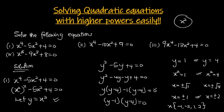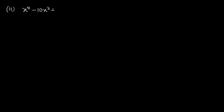Based on this first example, you can go ahead and try the second, third, and last examples. Pause the video and attempt them using the explanation I just gave. For the second example we have x⁴ - 10x² + 9 = 0. Just like before, we rewrite x⁴ as (x²)², giving (x²)² - 10x² + 9 = 0.